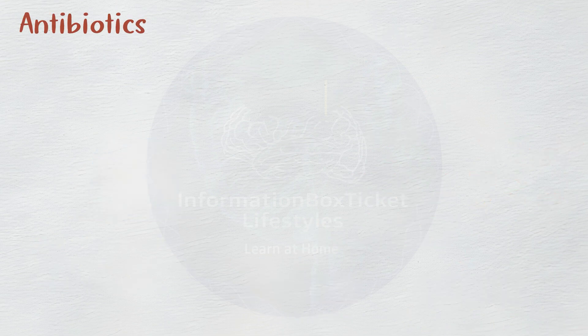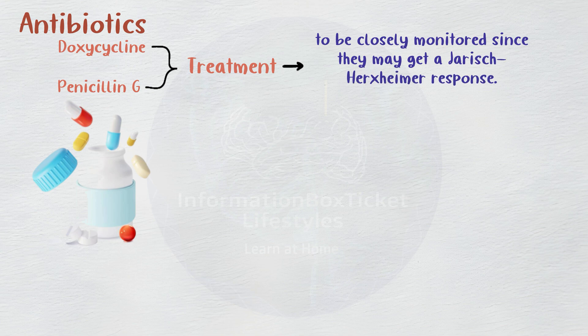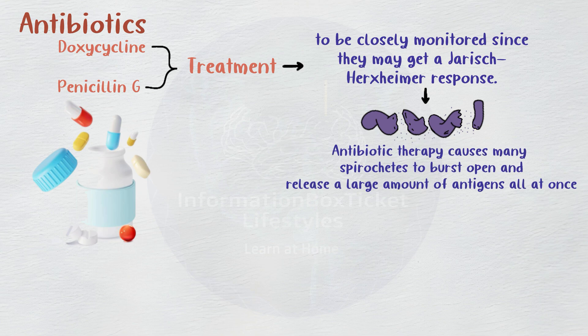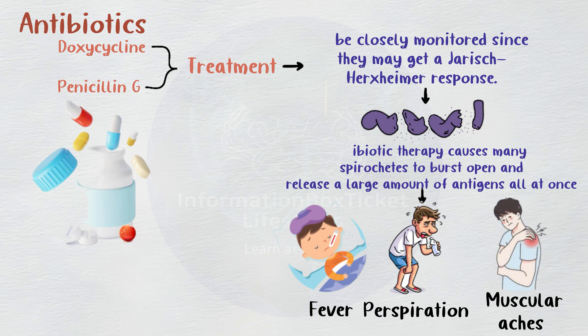Antibiotics like doxycycline and penicillin G are used in treatment. People who are receiving antibiotics need to be closely monitored, since they may get a Jarisch-Herxheimer response. This is when the antibiotic therapy causes many spirochetes to burst open and release a large amount of antigens all at once, which might cause fever, perspiration, and muscular aches.